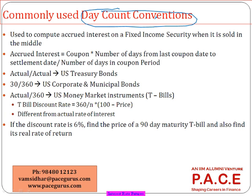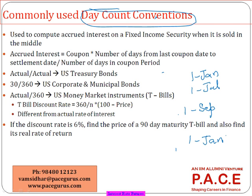I want to sell off the bond somewhere in the middle. Let's say the bond is purchased on first January, the coupon is being paid on first July, and I am thinking of selling the bond on first September. The next coupon will be paid on first January. Now, the other party who has purchased it will receive the next coupon declared on first January — I would not be the recipient.